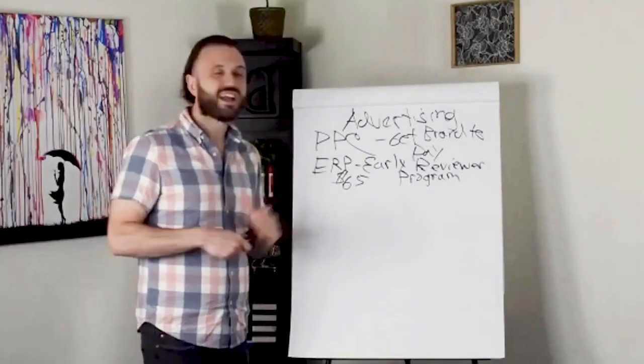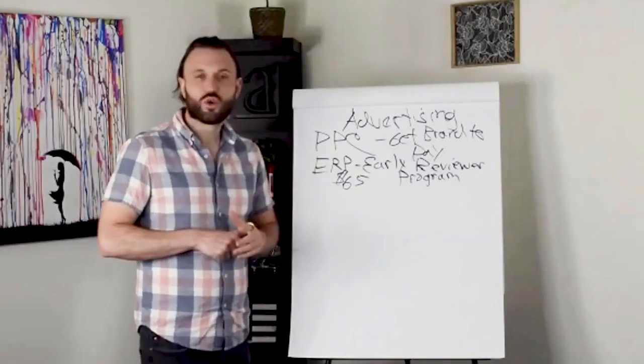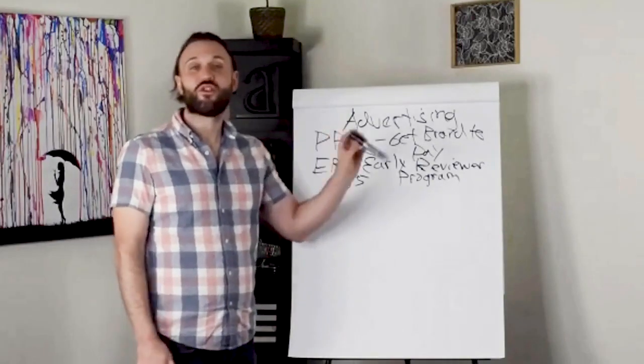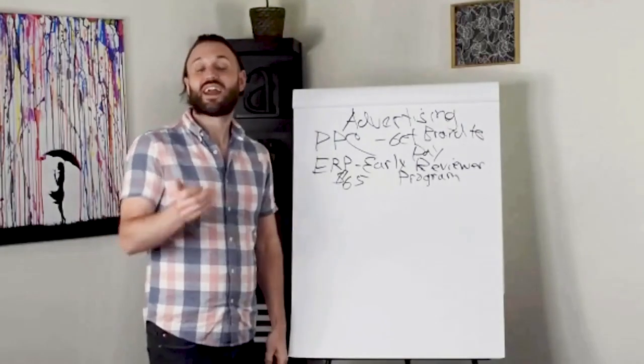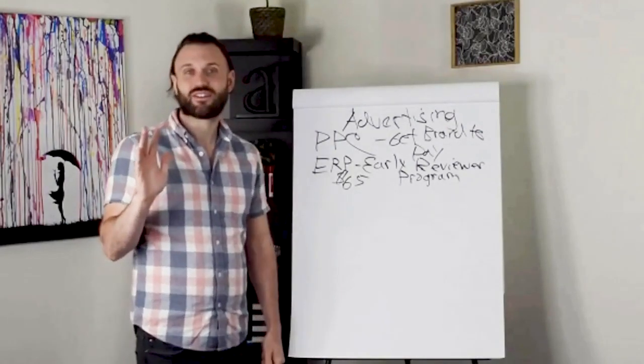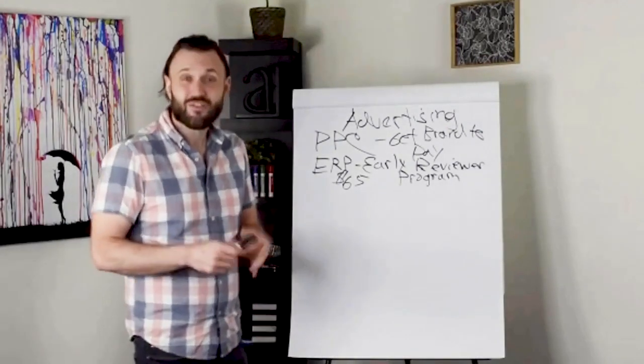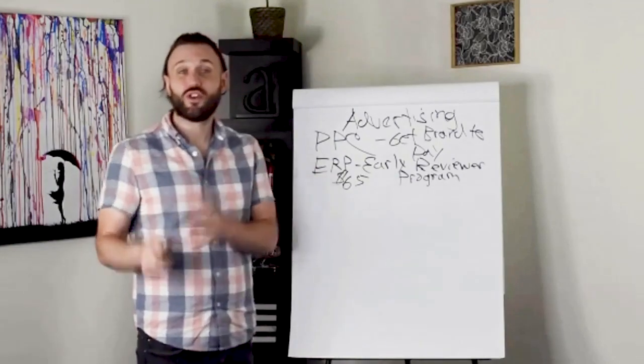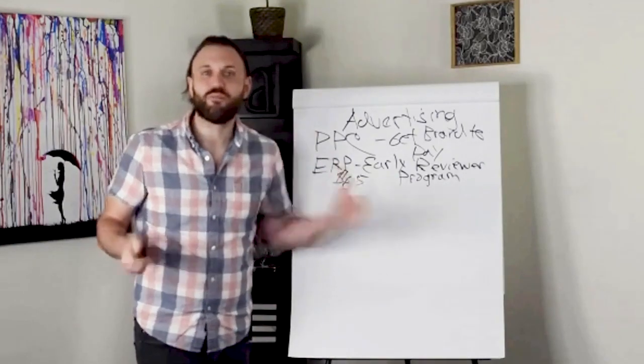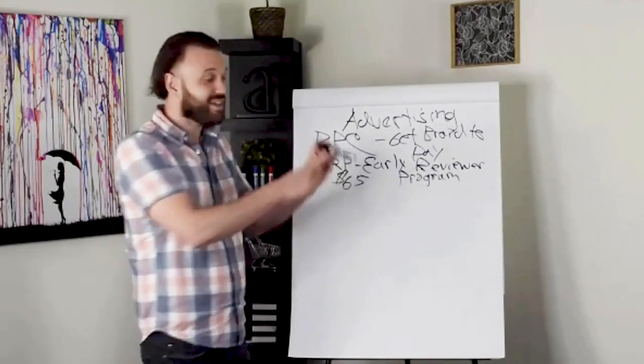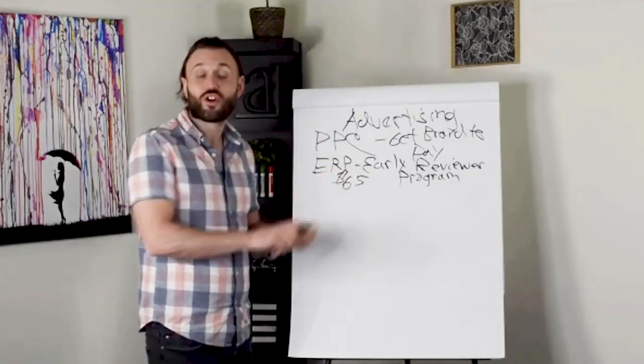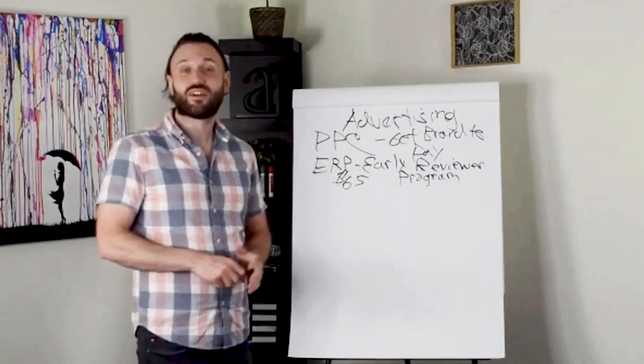What Amazon will do is a few days after this buyer received the delivery of this Sharpie marker, Amazon is going to send them an email and say, hey customer, I hope you enjoyed your order of Sharpie. If you leave a review for this product, we will give you a $3 coupon that can be used anywhere on Amazon.com. So it's incentivizing the buyer to leave a review by giving them free money to purchase other products on Amazon. The free money doesn't have to be used for another Sharpie marker. It could be used anywhere on Amazon's website.